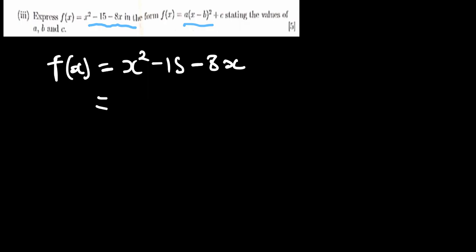So f of x equals x squared minus 15 minus 8x. So this is the function that we have. So completing the square, we just follow this method. So we write x squared, then let me put the minus 8x here. So minus 8x and minus 15.